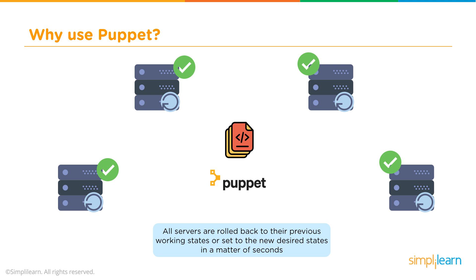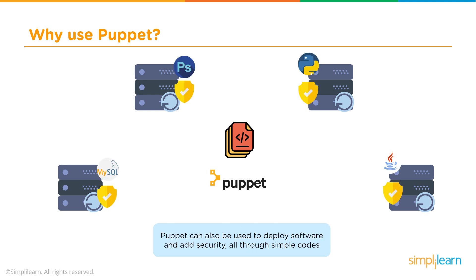It doesn't matter how large your server environment is — you can reach all of these servers. Your environment is secure. You're able to deploy your software, and you're able to do this all through infrastructure as code, which is the advanced DevOps model for building out solutions.